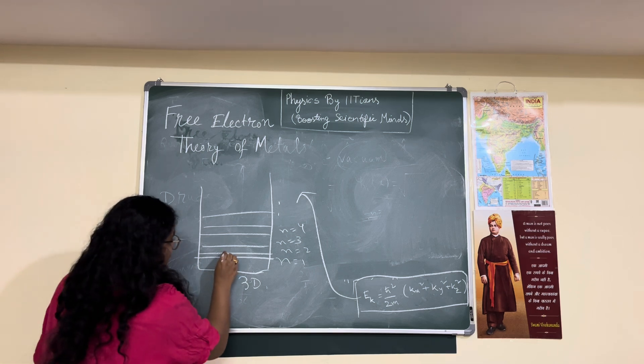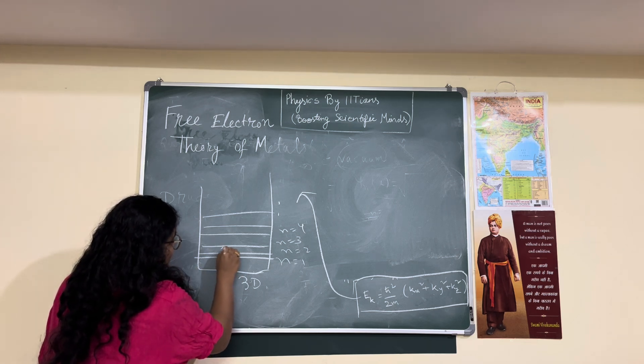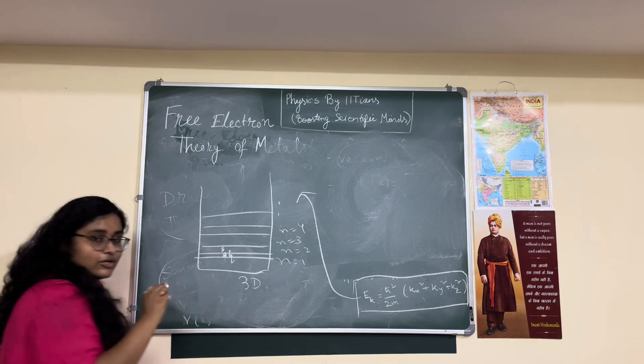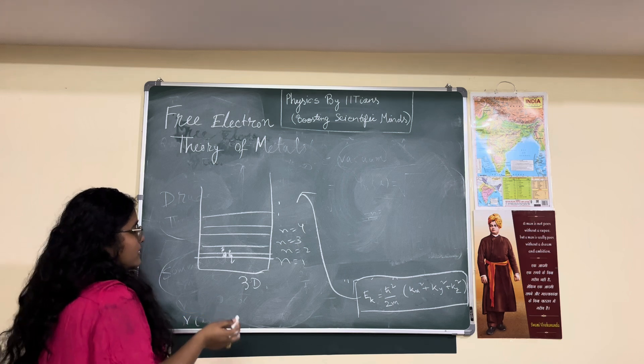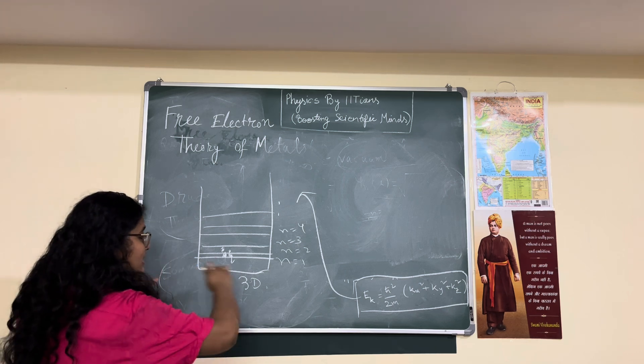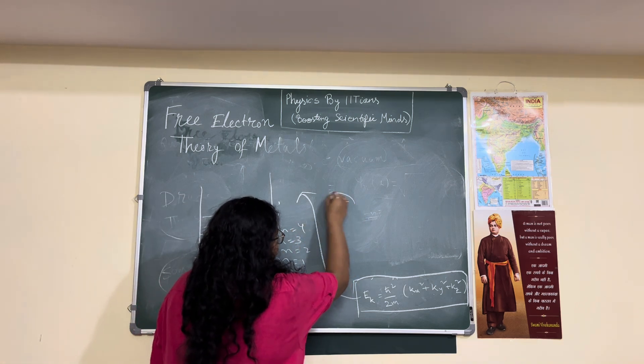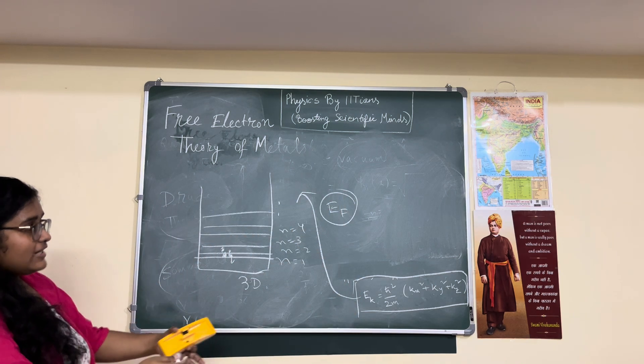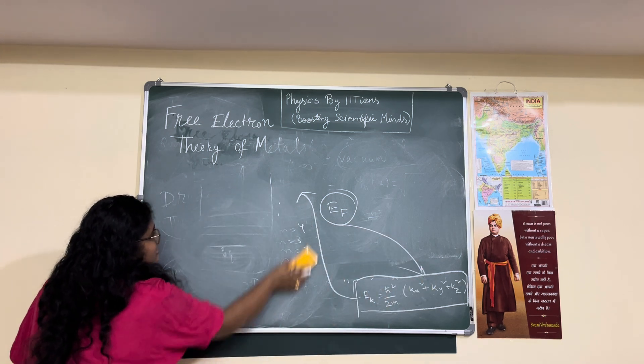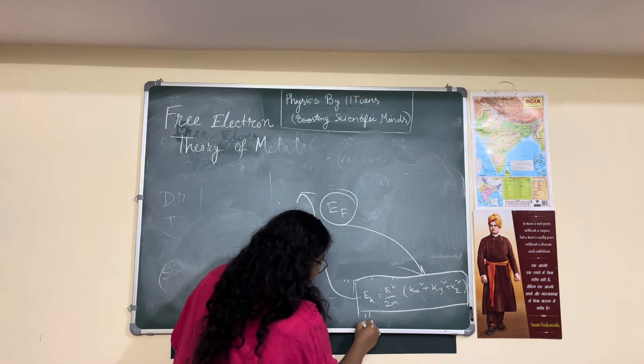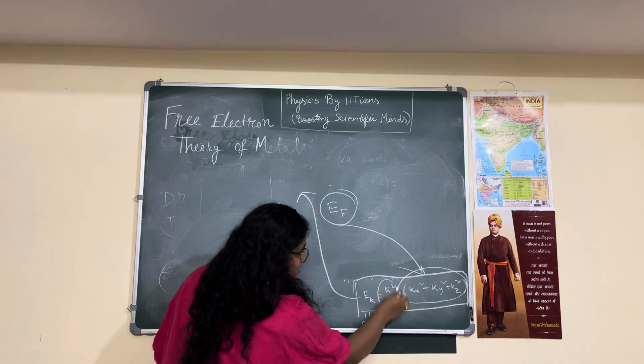You have to consider the Pauli exclusion principle to fill the energy levels because electrons are fermions. So if you put one electron spin up, then you will put another electron spin down. Similarly you put another spin up, spin down. So each level contains two electrons having opposite spins due to the Pauli exclusion principle. And then once you completely fill the energy levels, that will lead to the E_F, that is Fermi energy level. And if you would like to plot it in k-space, how do you plot it? Look at this equation.